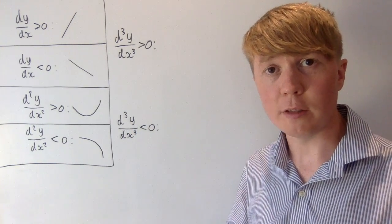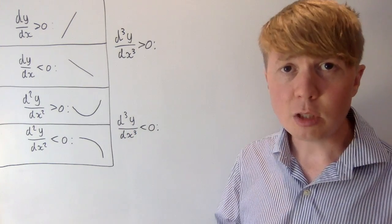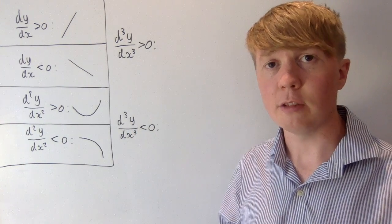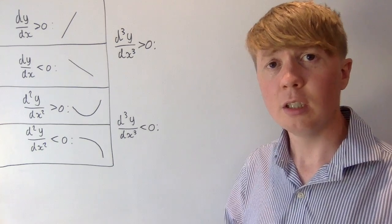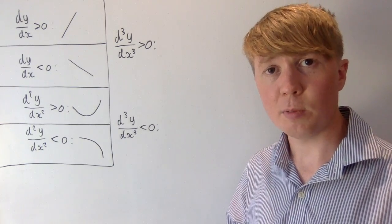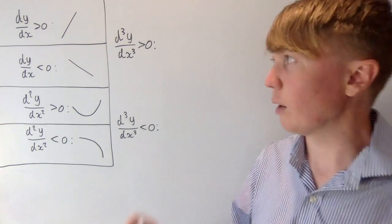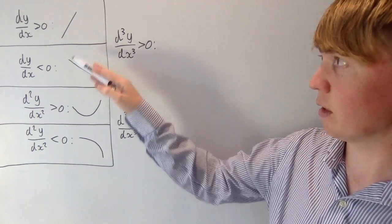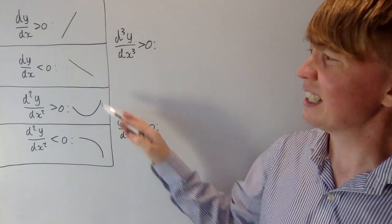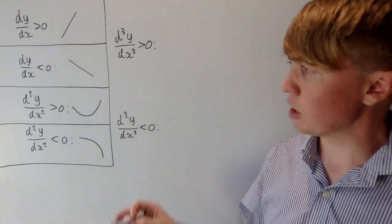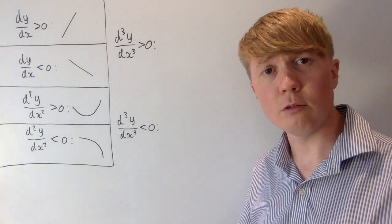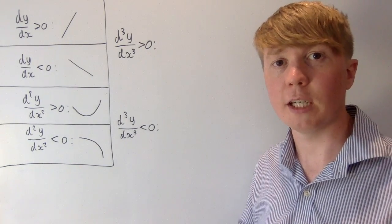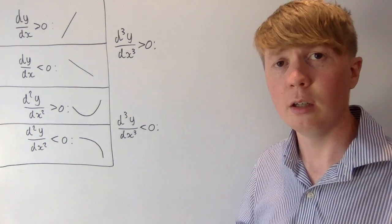So what about the third derivative? To understand the third derivative, it might be helpful to think of our function as a displacement-time graph. The first derivative is velocity, the second derivative is acceleration, so our third derivative represents the rate of change of acceleration.